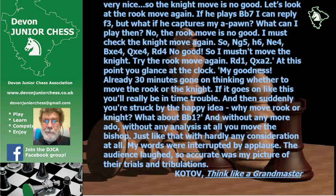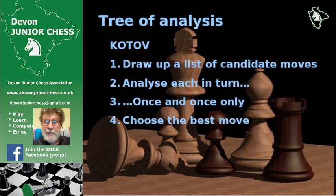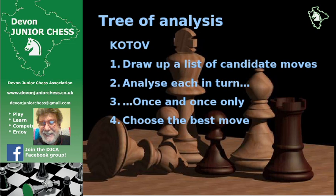So Kotov says: you analyze by drawing up a tree of analysis. You draw up a list of candidate moves — in the previous example that would be Rd1, Ng5, and a bishop move. You analyze each in turn once and once only. Don't dither between them, and then you choose the best move. This idea of candidate moves, I think, is really good — make a list of the moves you need to think about and then think.